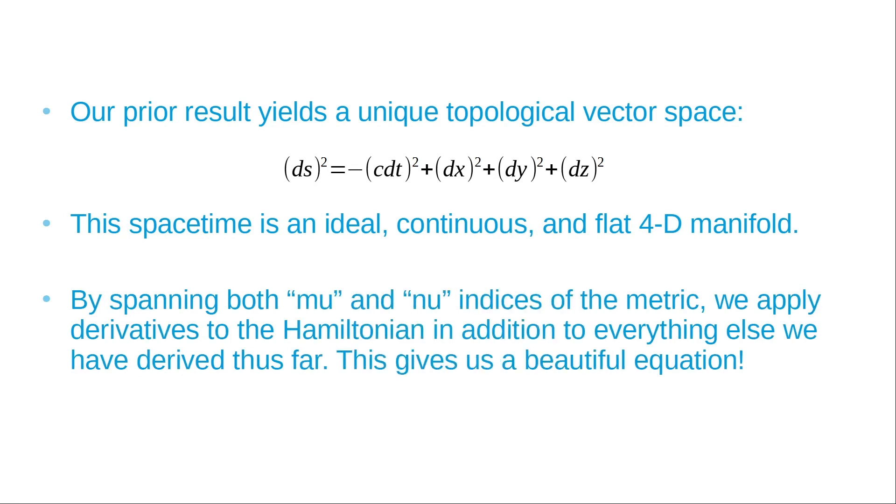By spanning both mu and nu indices of the metric, we can use derivatives with respect to both mu and nu. We can apply these derivatives to that initial Hamiltonian, which was no energy so it'll still equal zero, and apply that to everything we've derived thus far in flat spacetime to yield what I consider a beautiful equation. Are we ready?